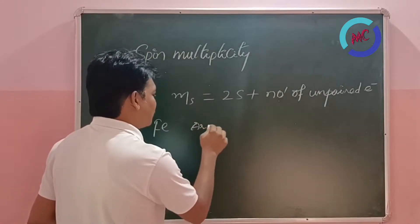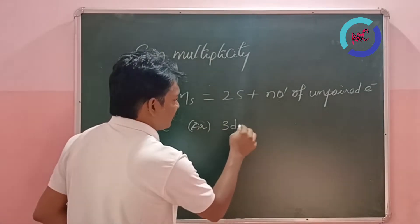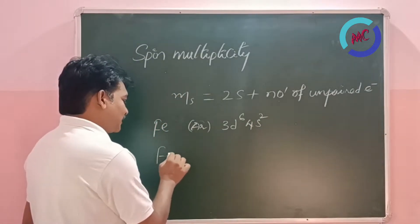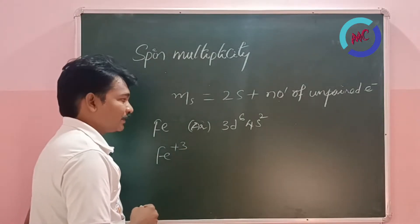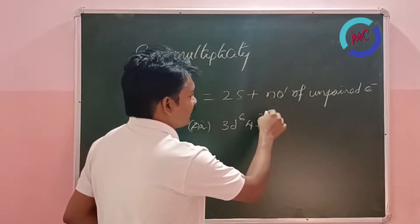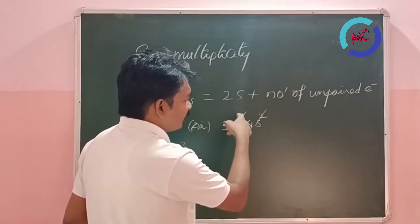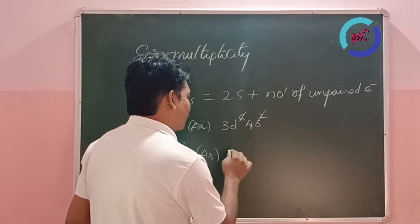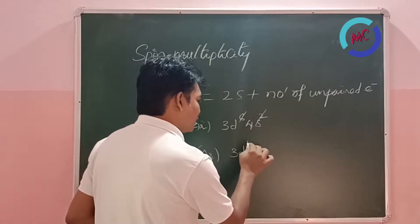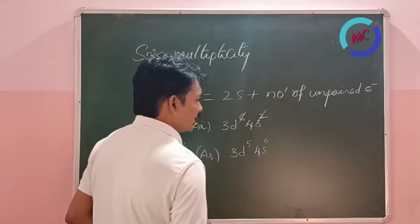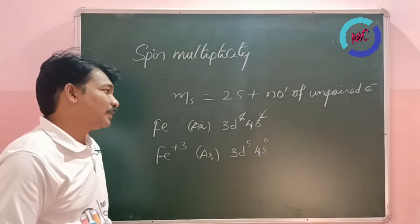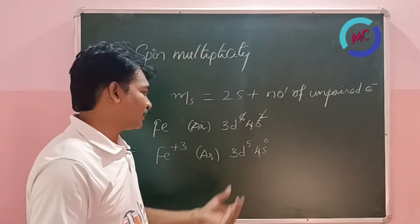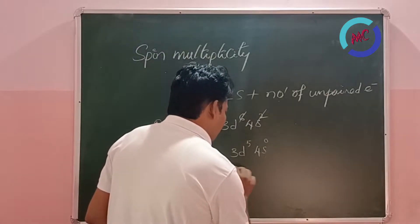Iron is nothing but [Ar] 3d⁶ 4s². By losing 3 electrons to become Fe³⁺ — 2 electrons from the outer 4s shell and 1 electron from 3d⁶ — the configuration becomes 3d⁵ 4s⁰.